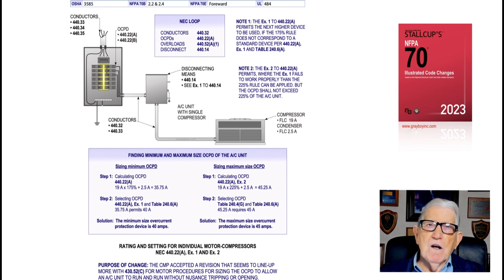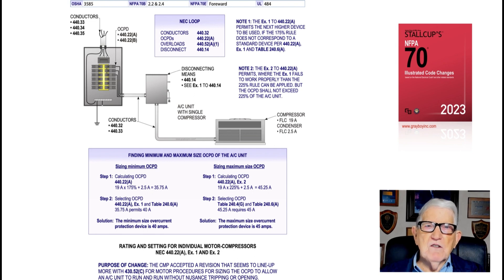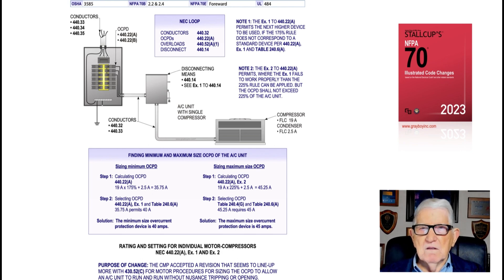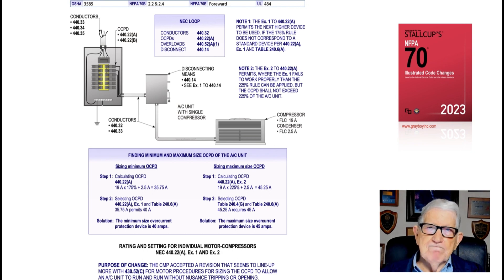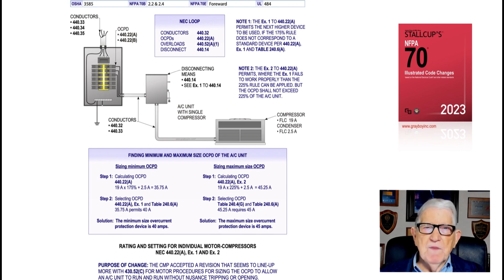This section 440.22(A) parallels what you're doing in 430.52(C)(1). The NEC loop gives you the sections for conductors, overcurrent devices, overloads, and the disconnect — which are mainly the key sections you look at to design a branch circuit with a disconnecting means to the AC unit. That's all this illustration is showing the user: when to round up and when to round down based on the 175% rule or the 225% rule.